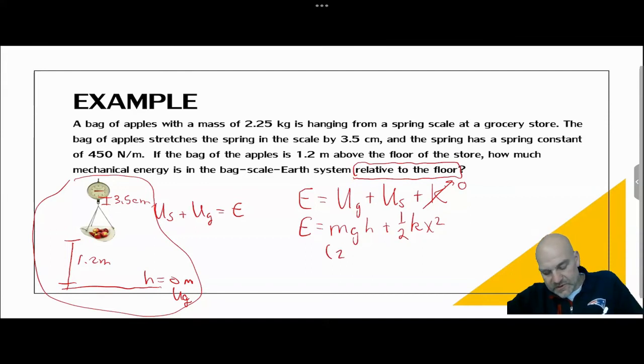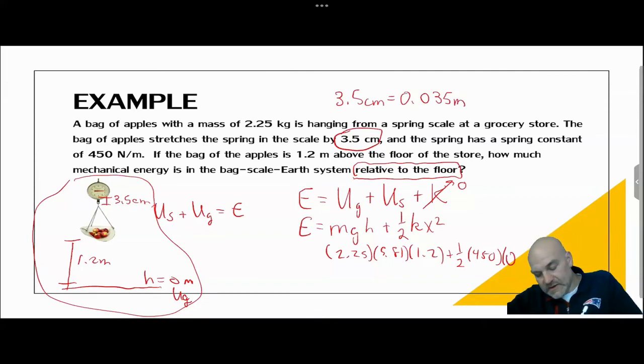And so we have 2.25 times 9.81, or 9.8, times 1.2 plus 1/2 k, which is 450, times—and now again, you have to be careful—this is 3.5 centimeters. We need to divide that number by 100 to give us 0.035 meters.